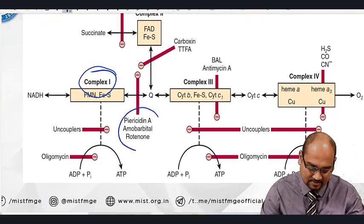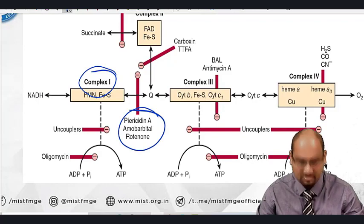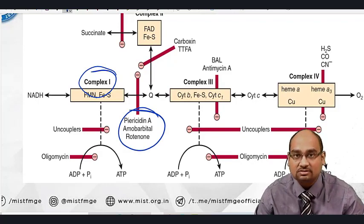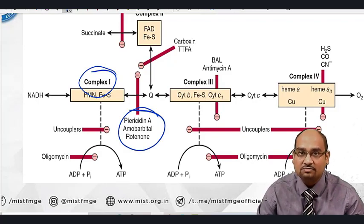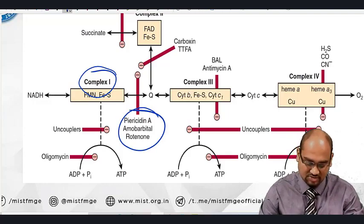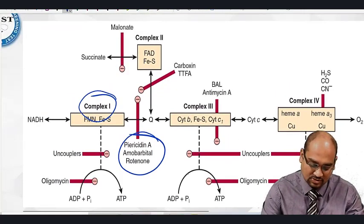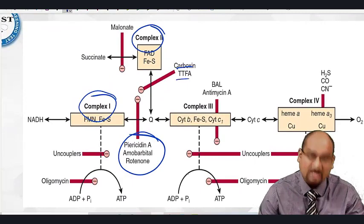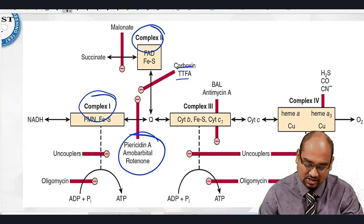If you remember, complex one inhibitors are piericidin A, amobarbital, and rotenone. We had discussed the mnemonic: Alka chairs Roten Piers in Bar—alkyl goalites, chlorpromazine, rotenone, piericidin A, and barbiturates. Complex two inhibitors are carboxin and TTFA (thenoyltrifluoroacetone).